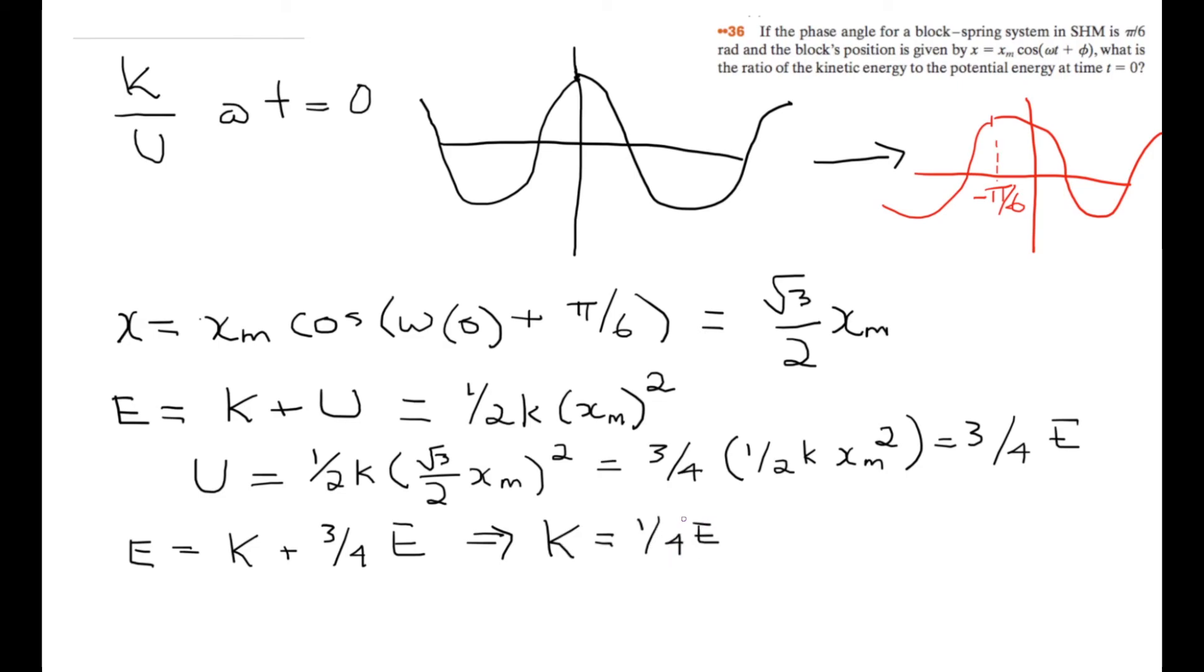This is at time t equals 0. So then, we're looking for K over U equals ¼E over ¾E, and this is equal to 1/3. So kinetic energy is a third of the potential energy at time t equals 0.